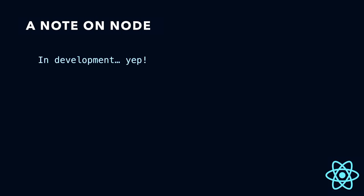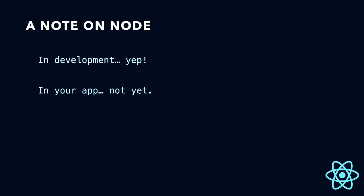A note on Node. You can use Node in development — it's a really handy tool to get your React Native stuff going. Use tools like NPM or Yarn to add extra libraries to your code. You can't actually use it as part of your app natively yet. People are working on it, and they've got it working on Android, but iOS is not happening quite yet.